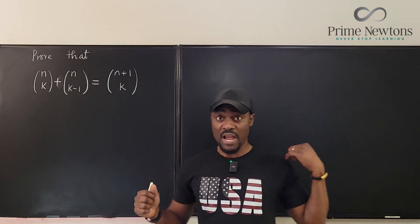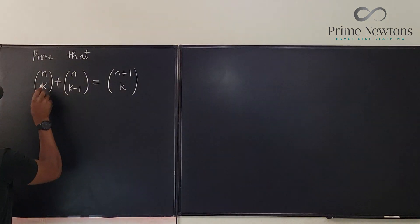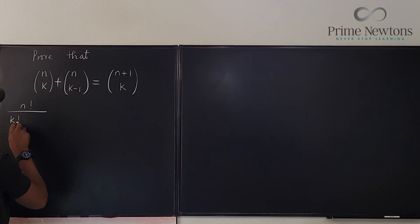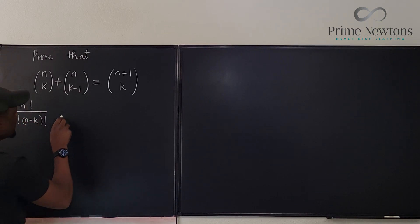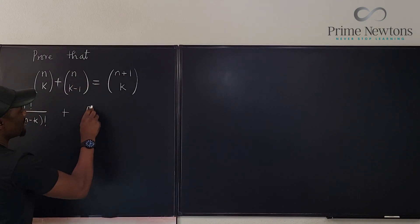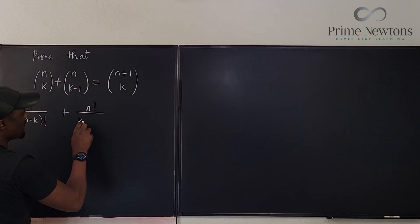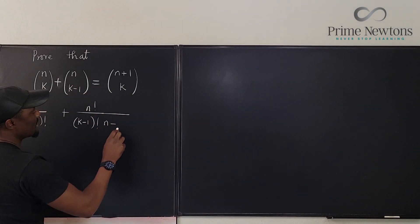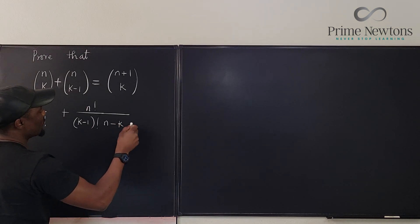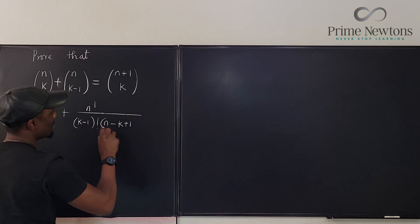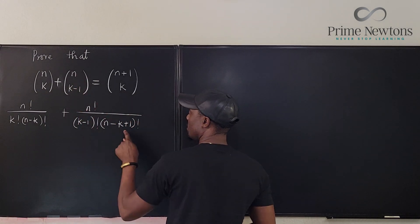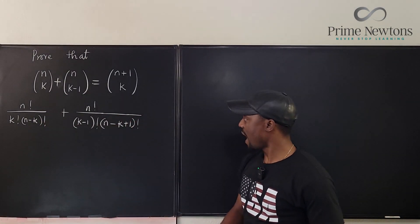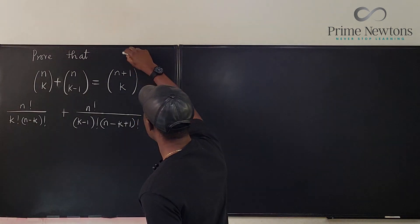The first thing I'm going to do is just write it out formally. So I know that what I have here is n factorial over k factorial times (n minus k) factorial, plus n factorial over (k minus 1) factorial times (n minus k minus 1 plus 1) factorial. The difference between these two gives a plus sign, so that's basically what I have, and this would be equal to — let's put a question mark for now.